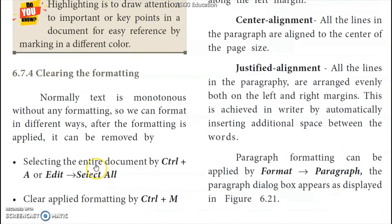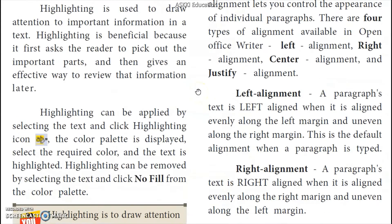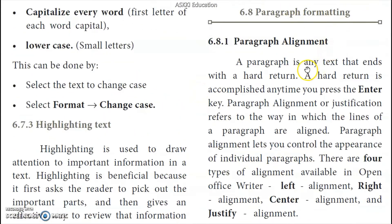Highlighting is used to draw attention to important or key points in a document for easy reference by marking in a different color. Next, coming to clearing the formatting — we can format the text with font size and color, and then later remove that formatting. Select the text using Ctrl+A or Edit > Select All, then use the clear formatting command.